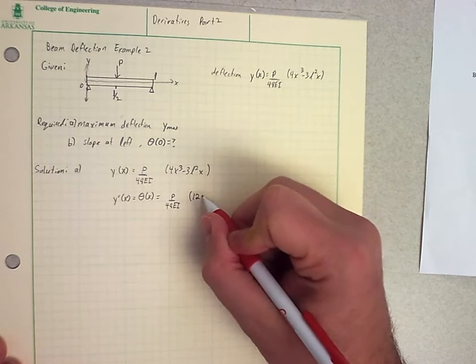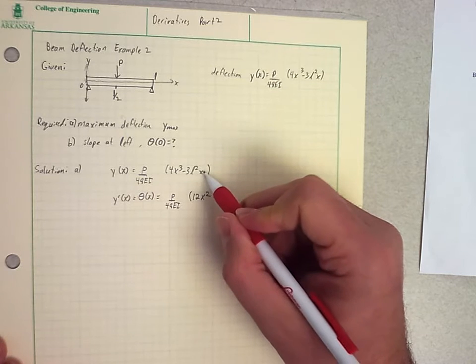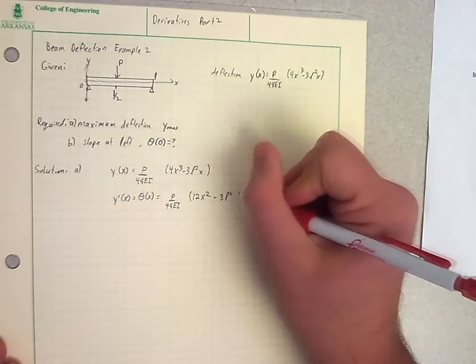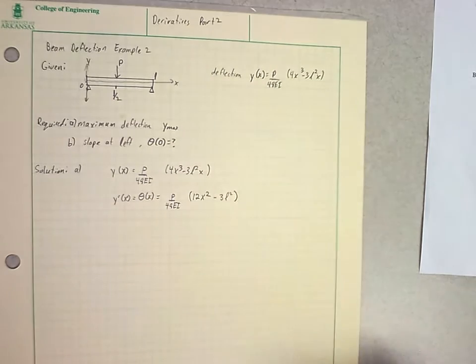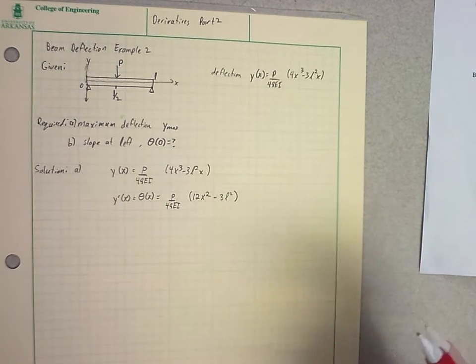And then I have an X term times that. So that would just be 3L squared times 1. So that would just end up with that expression for my derivative of deflection or my slope.